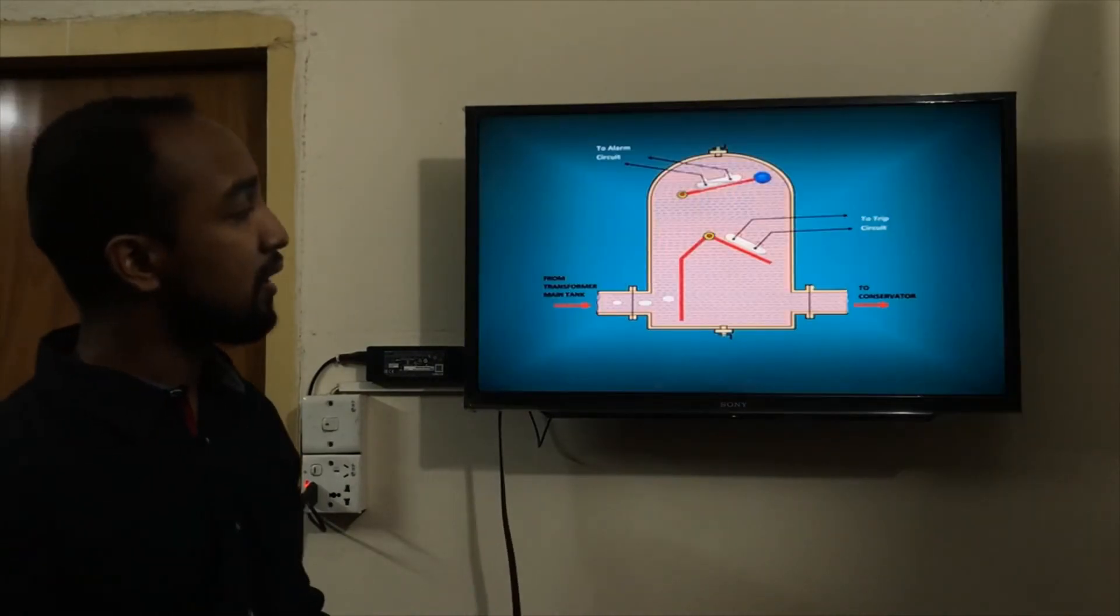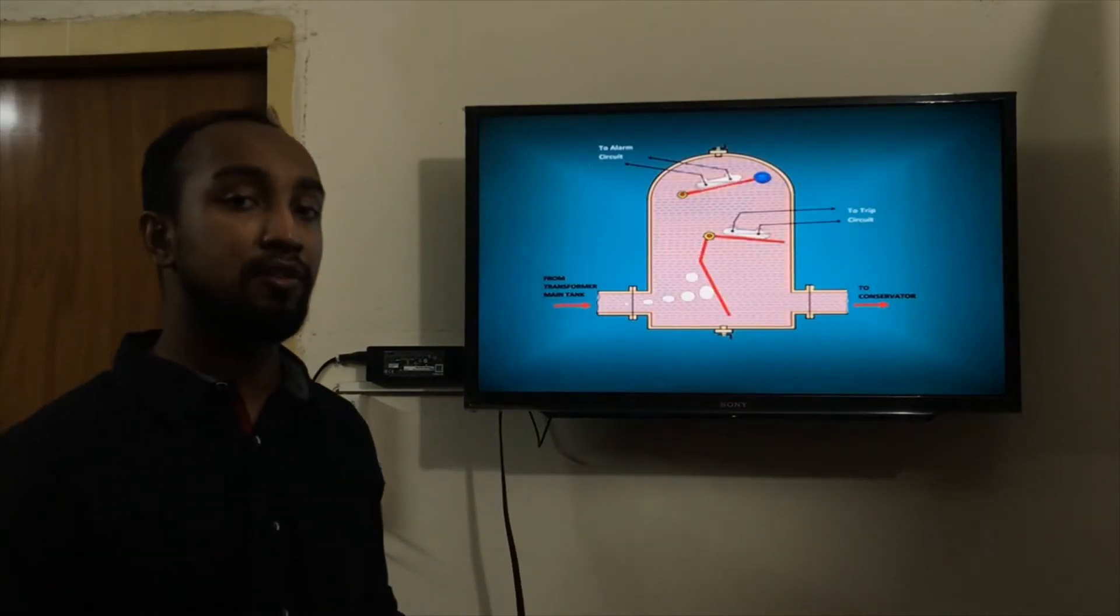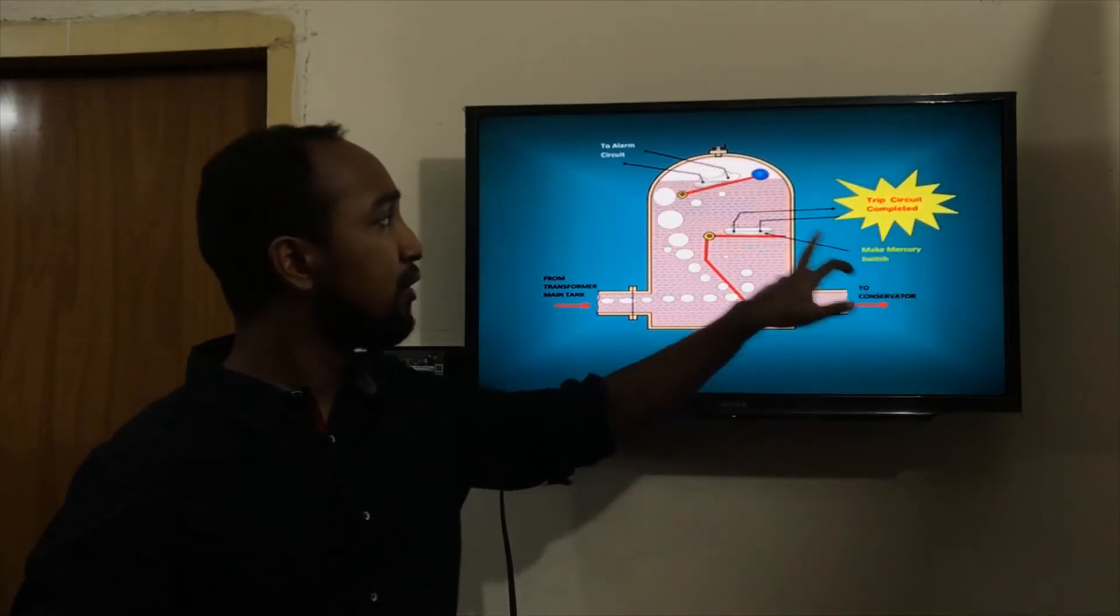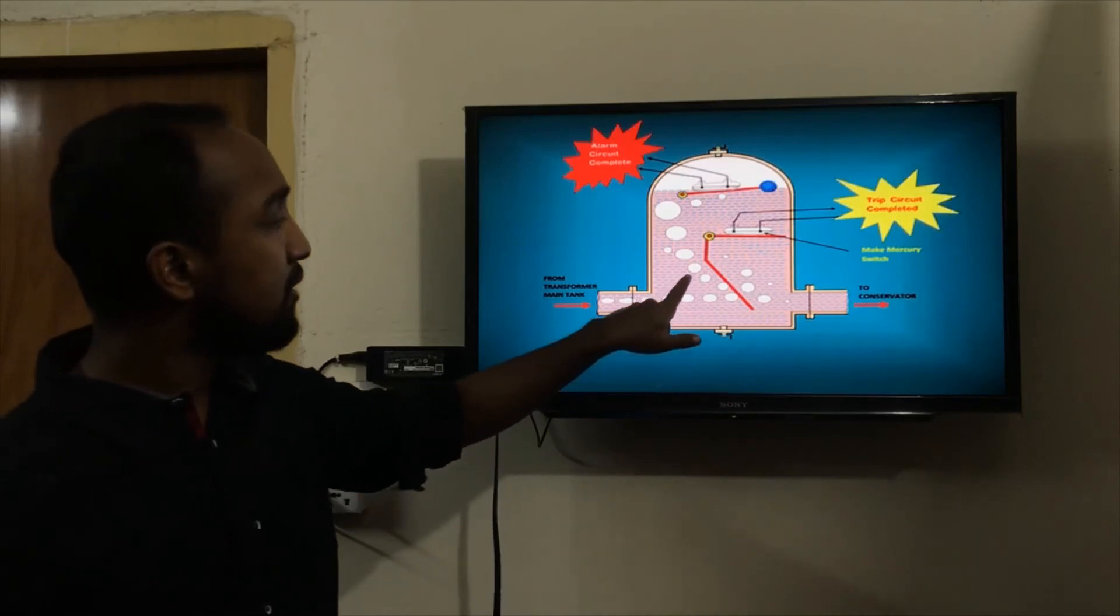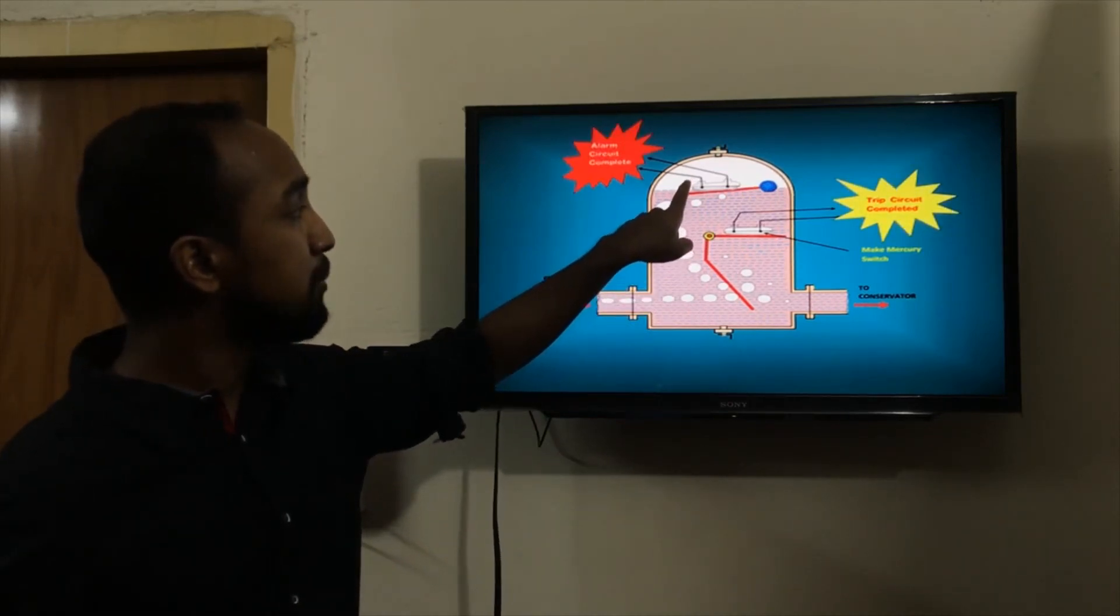Here you can see a simple animation of a Buchholz Relay. Typically, mercury switches are used in this type of relays. Here you can see bubbles of gases forming in the upper chamber of the relay.